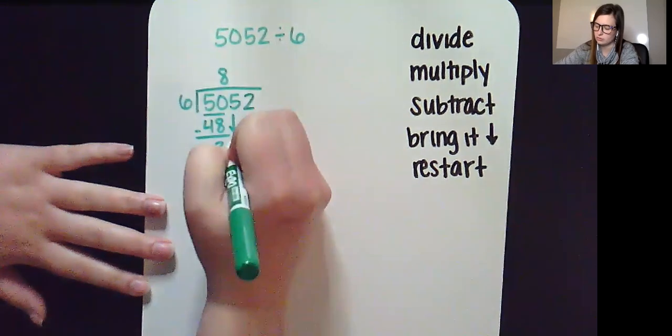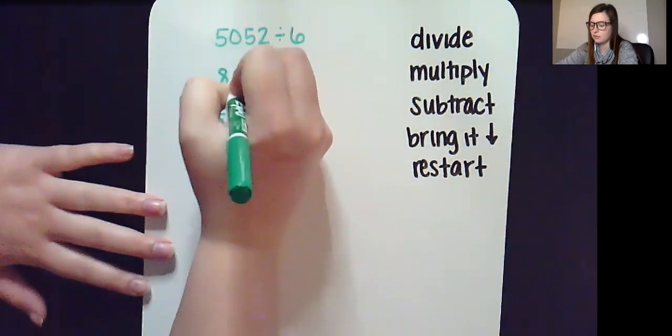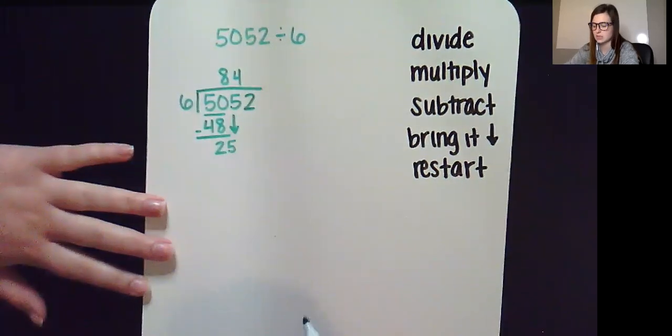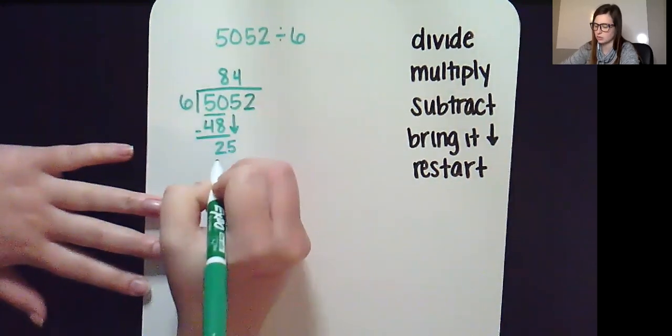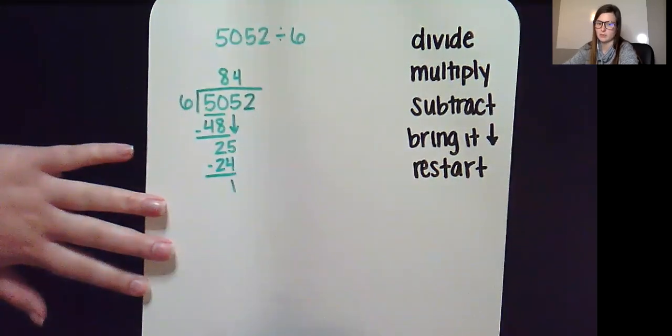Bring down the 5. If I have 25, I can make 4 groups of 6. 4 times 6 is 24. When I subtract, I'm left with 1.